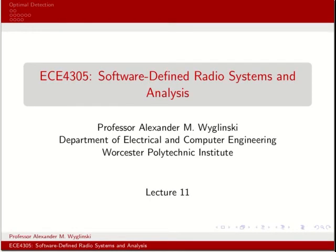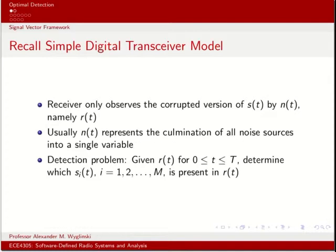Welcome to lecture 11 of ECE 4305, Software-Defined Radio Systems and Analysis. In this lecture, we'll be studying the topic of optimal detection. As we saw in the last class, we looked at how we can convert time domain signal waveforms into a vector representation. Part of the motivation for doing that conversion is that it sometimes yields more mathematically accessible types of derivations and analyses — instead of conducting integrals over difficult time domain waveforms, all we need to do is various vector and matrix operations. We're going to leverage that signal vector framework extensively in this lecture, in particular when deriving the optimal detection scheme at the receiver.